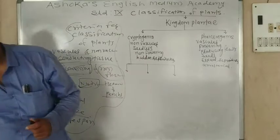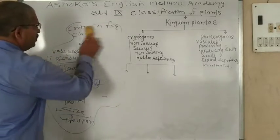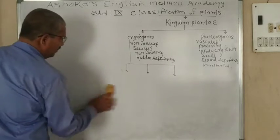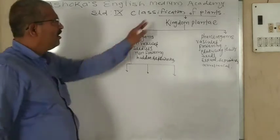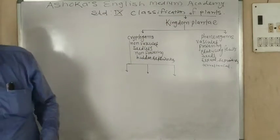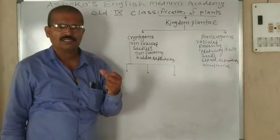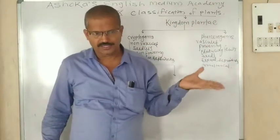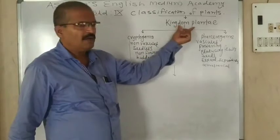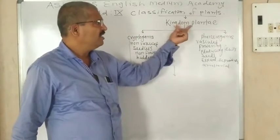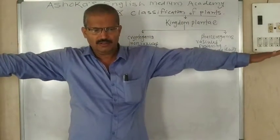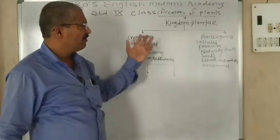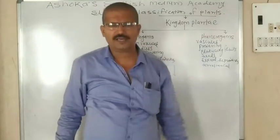After looking at these criteria, we are now going to see how plants are classified. Any plant belongs to the kingdom Plantae, also called the plant kingdom. All the plants of the world are divided into two groups: one is Cryptogamae and the second group is Phanerogamae.